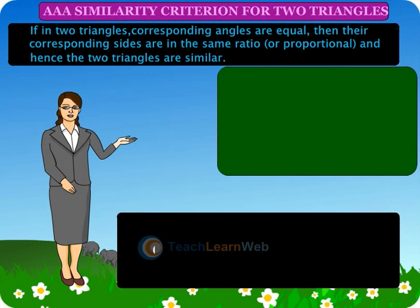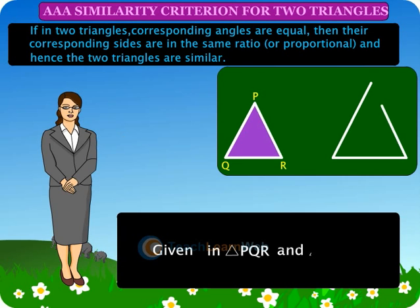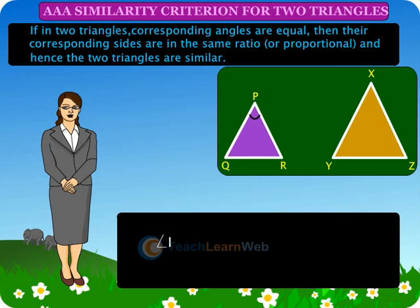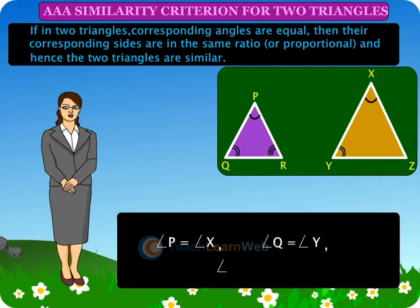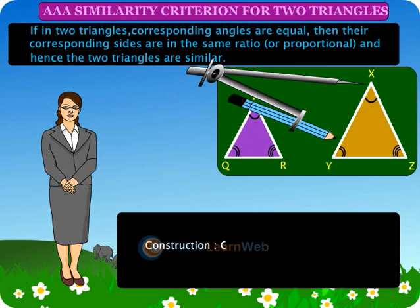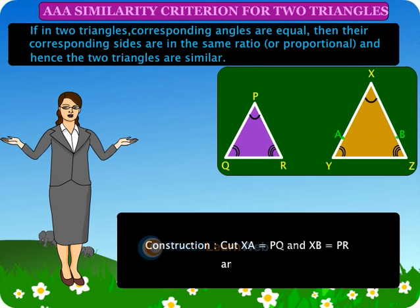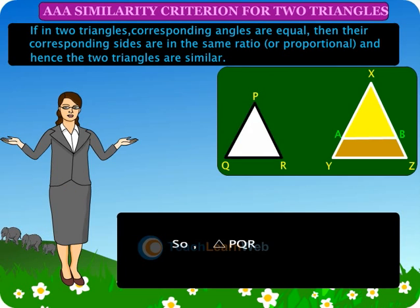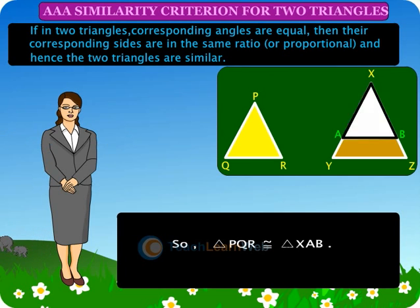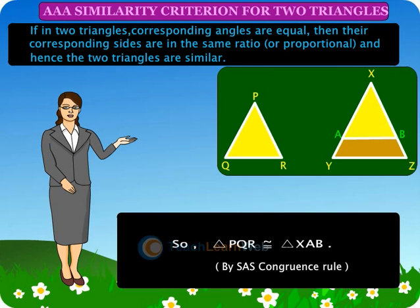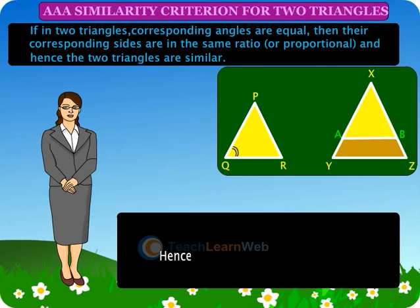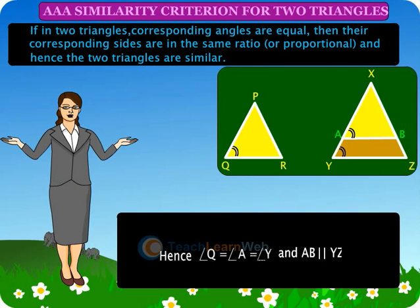Given in triangle PQR and triangle XYZ: angle P equals angle X, angle Q equals angle Y, angle R equals angle Z. Construction: cut XA equal to PQ and XB equal to PR, and join AB. So triangle PQR is congruent to triangle XAB by SAS congruence rule. Hence, angle Q equals angle A equals angle Y, and AB is parallel to YZ.